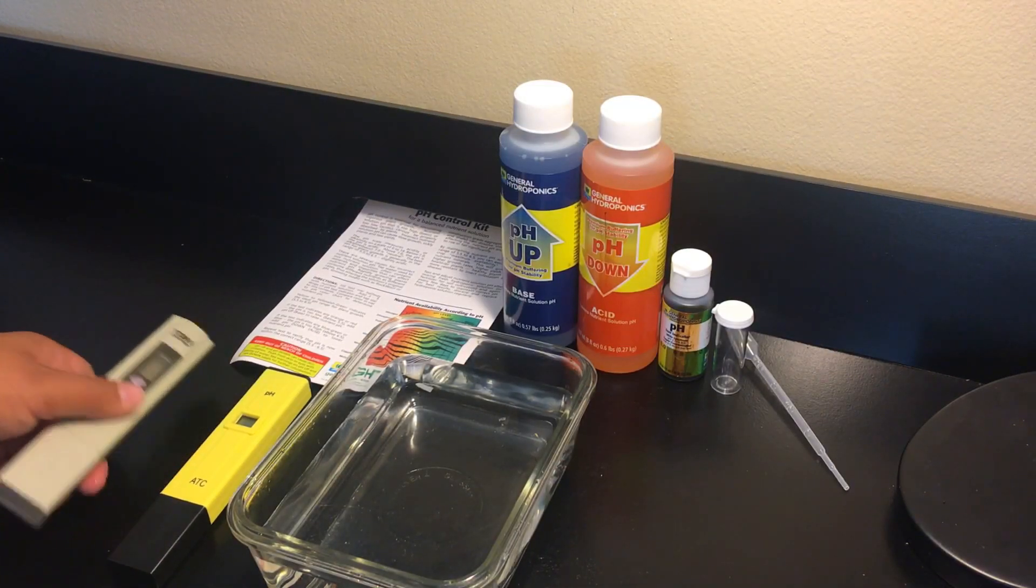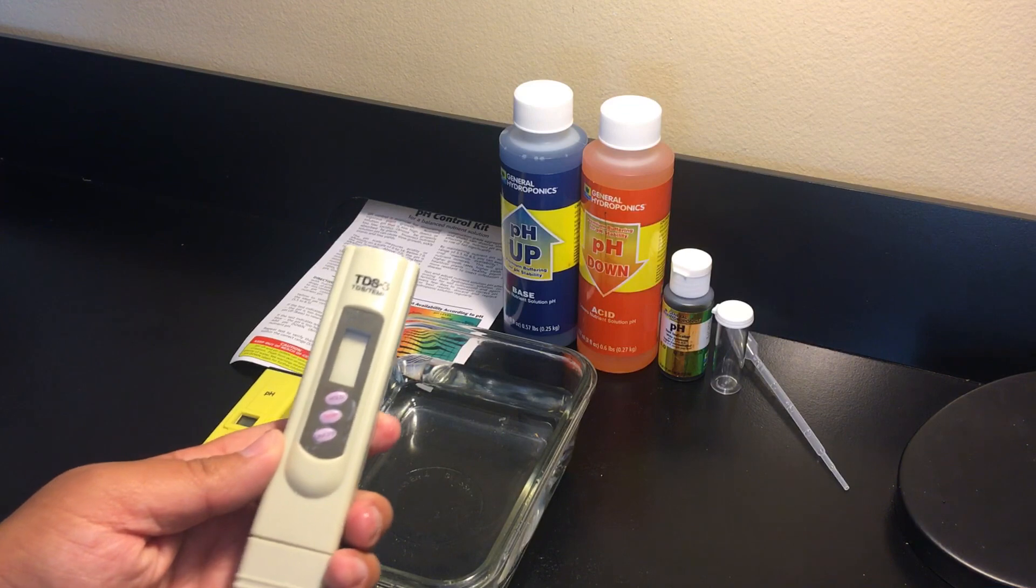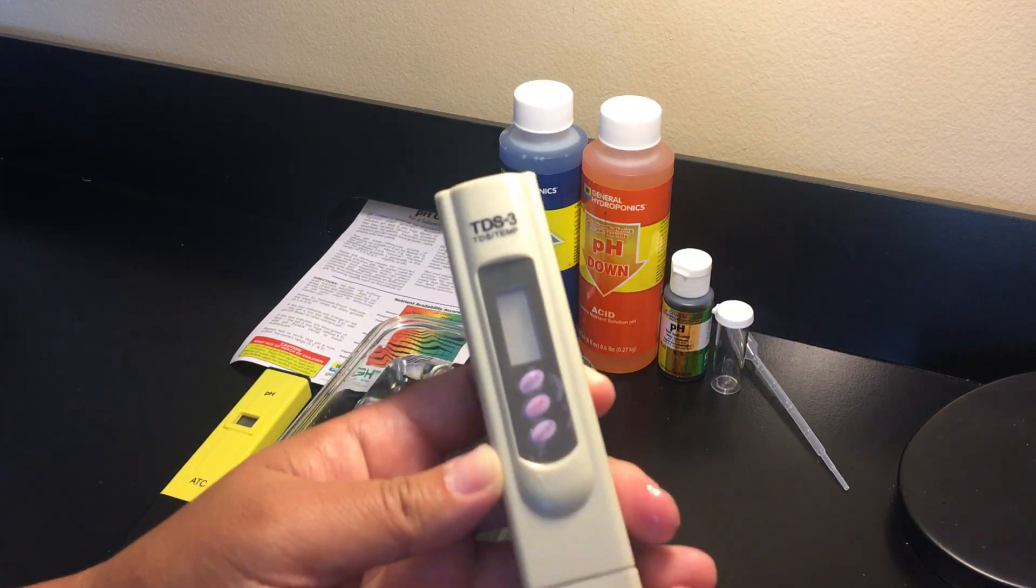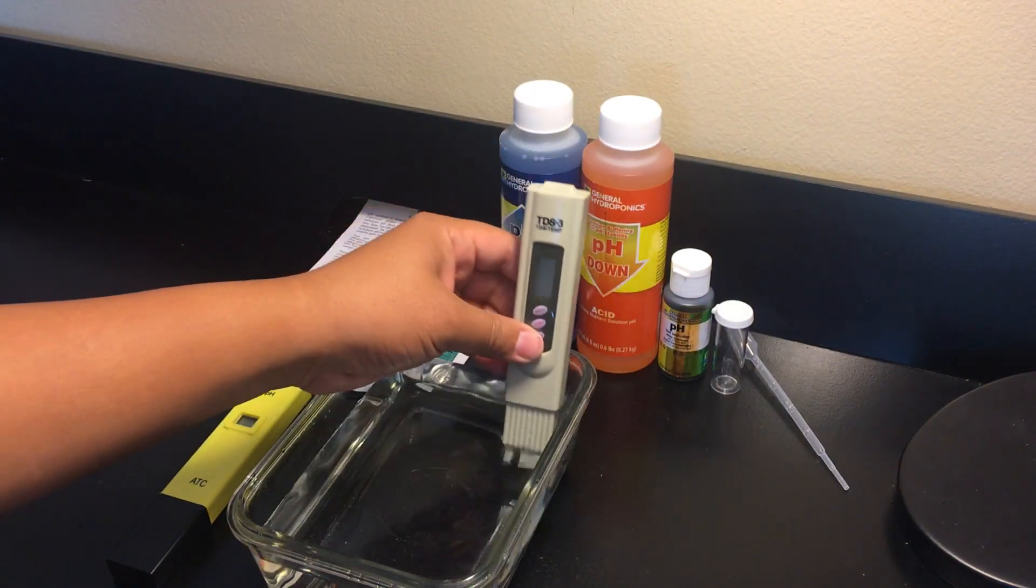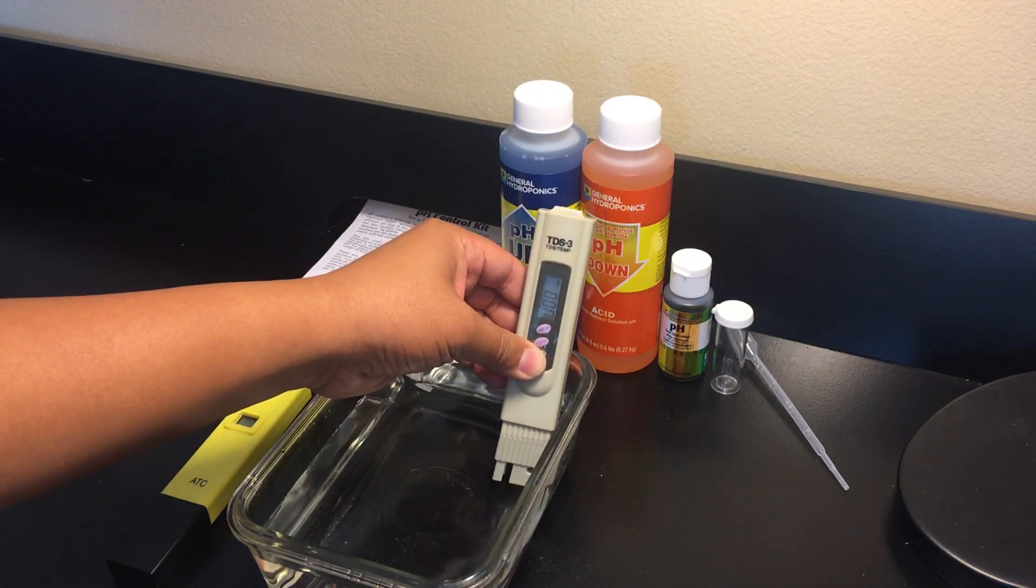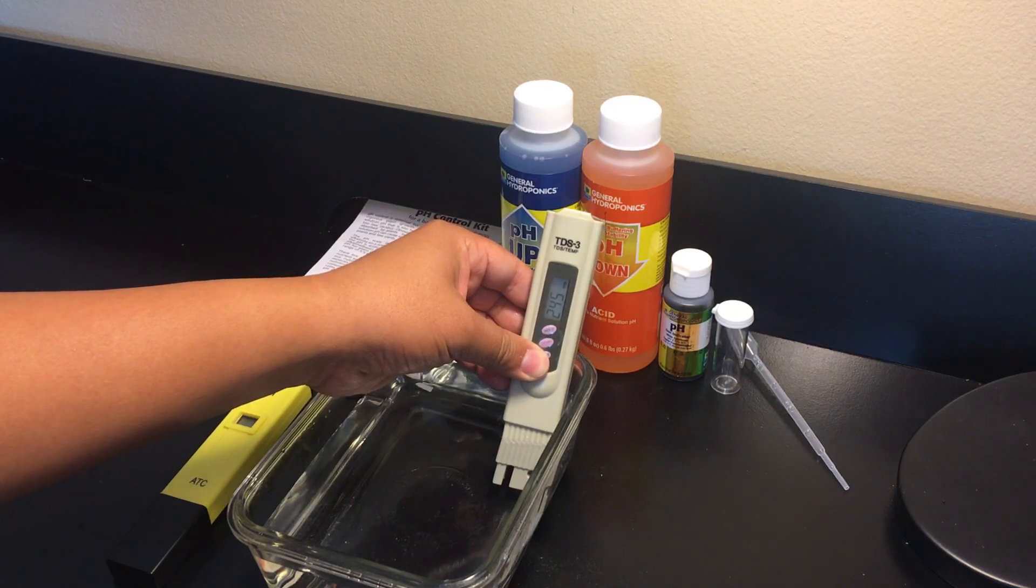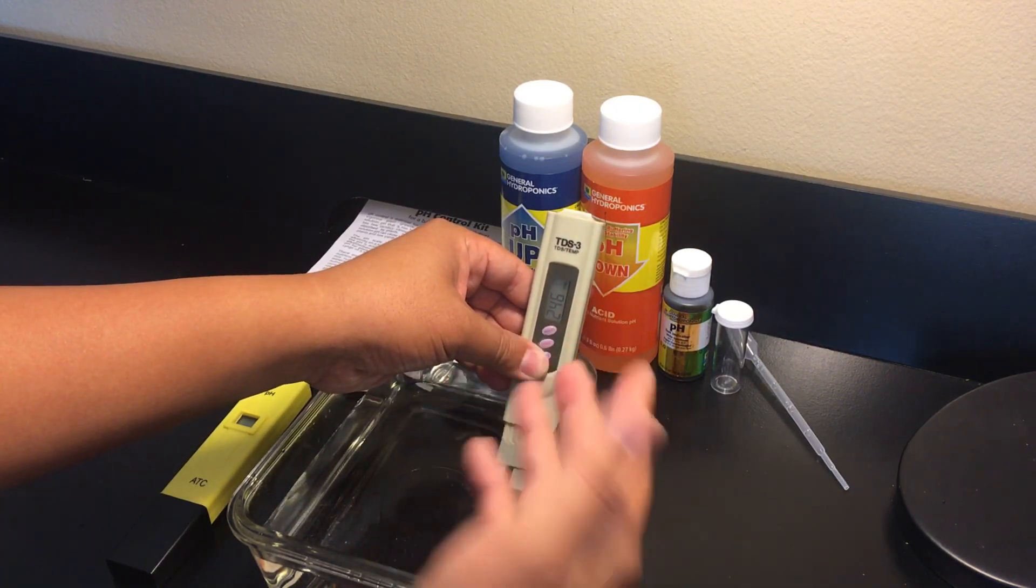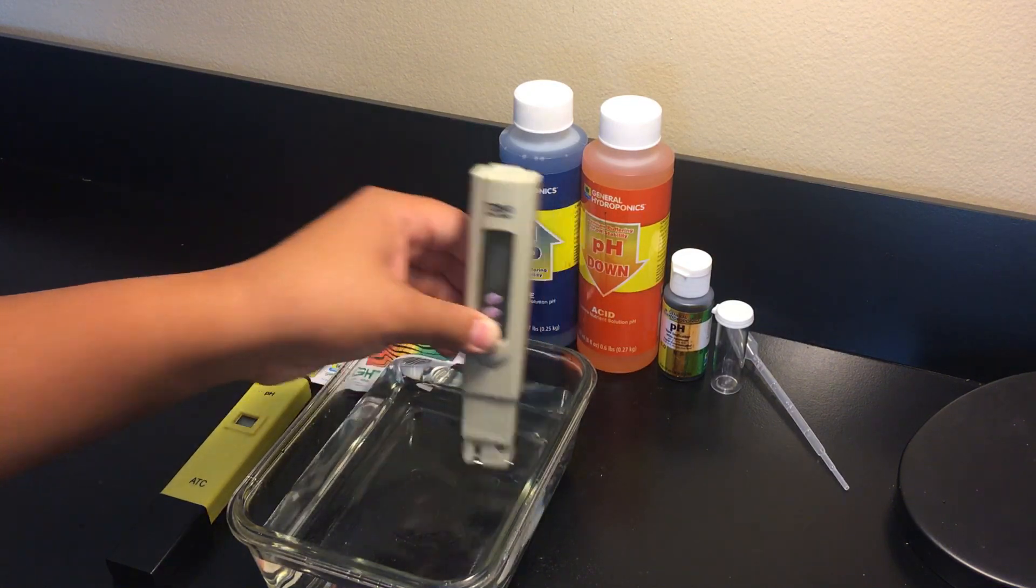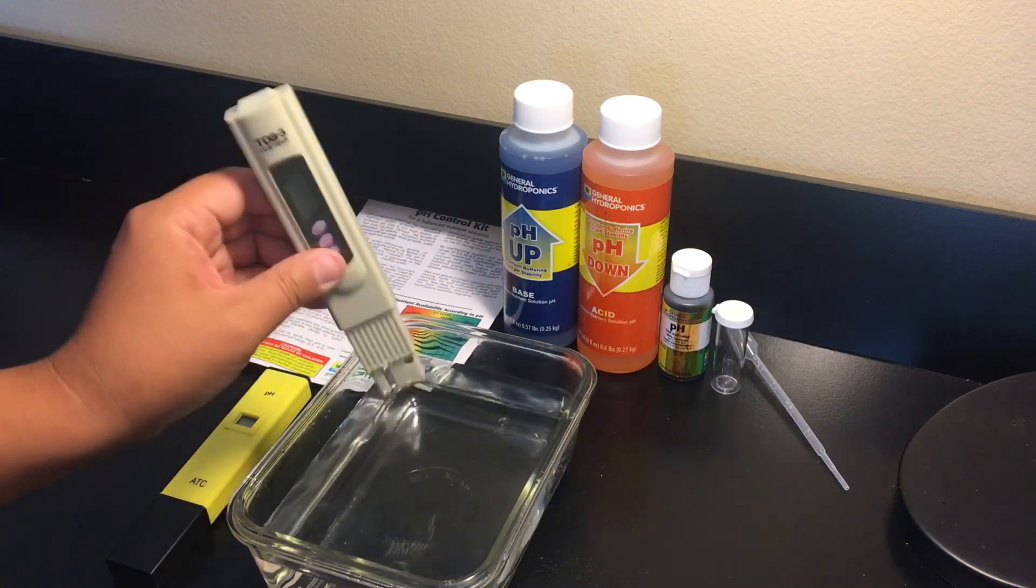So as far as how to use it, a TDS meter is really easy to use. You stick it in the water, turn it on and it'll instantly give you a parts per million rating. Here when used on regular tap water you can see that it's about 245, which is typical for tap water as it should range from 150 to 400 parts per million.